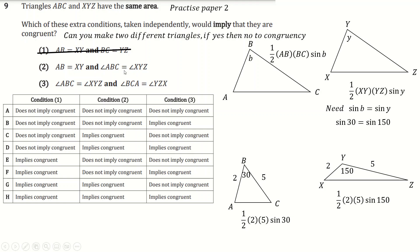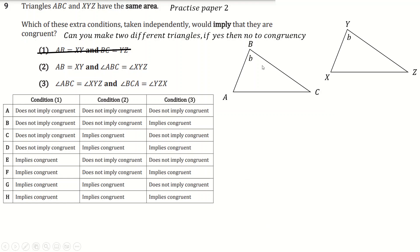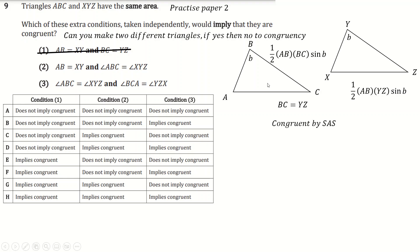What about the next condition: AB equals XY, and the same included angle B equals Y? Setting up the same two area equations and cancelling — the sine terms cancel because the angle is the same, and AB cancels because those lengths are equal. We're left with BC equals YZ. So we now have side, angle, side all the same — by SAS they are congruent. So we can only draw one unique triangle with that condition, and it does imply congruency.